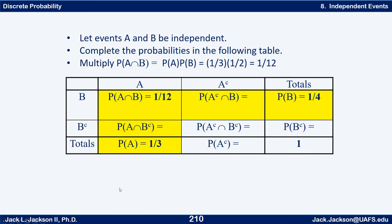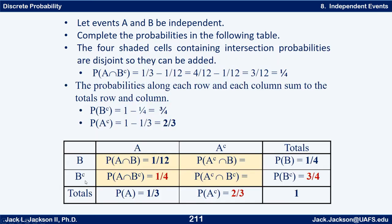Once I have those I can finish out. So here, one minus one fourth is three quarters. One third minus one twelfth — get a common denominator, multiply top and bottom by four — gives four twelfths minus one twelfth, which is three twelfths; divide by three and that's one fourth. So this probability is one fourth. These two add: one twelfth plus one fourth is one third.